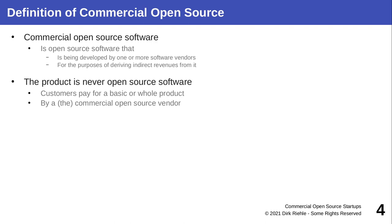The key to understand is that there is no open source product in itself. Open source is always free. The product will be something complementary, enriched by open source software that is part of it. So the product is never free — the open source software is, but the product is something complementary. We still call it commercial open source or an open source business model because it builds on open source, but it is not open source.